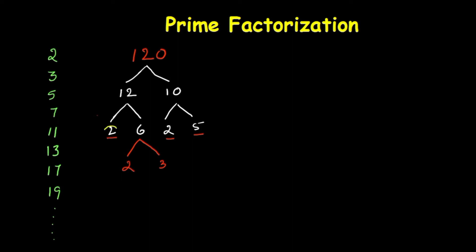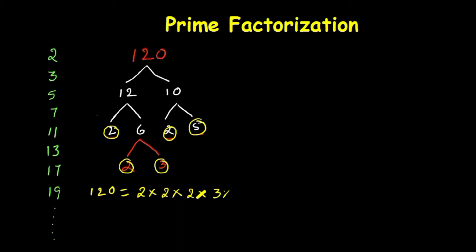Finally we have all prime numbers: 2, 3, 2, and 5. So 120 can be written as 2 times 2 times 2 times 3 times 5. In exponential form, we check how many 2s there are — 3 times — so we write 2 to the power of 3, times 3, times 5.